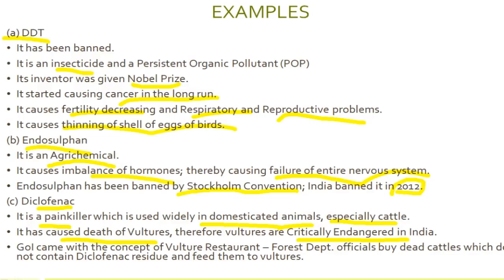But that was not all. With the vultures gone, wild dogs began eating the cows. They could withstand diclofenac and so their population soared. They also transmitted the rabies virus from carcasses and spread it to other dogs. Rabid dogs began attacking human beings and deaths due to rabies rose to 35,000 a year — the highest in the world. Note that vultures could destroy the rabies virus with their strong stomach acid. Leopards then found dogs to be easy prey, their population soared, and more people were killed in man-leopard encounters.